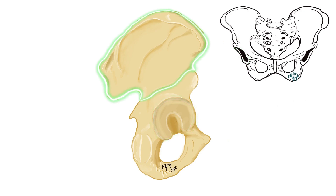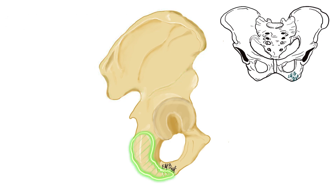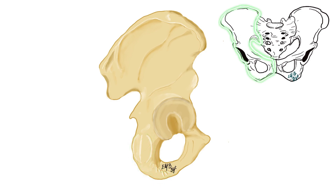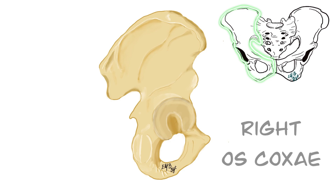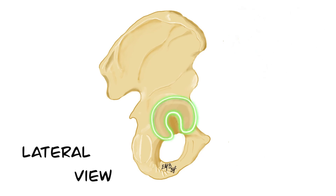The wing-shaped part of os coxa, which is ala osis ilii in Latin, faces superiorly. The protruding rough thick part, which is the ischial tuberosity, faces posteriorly. When we place all these aspects together, we can clearly see this os coxa is the right os coxa. We can clearly see the acetabulum, and since it faces laterally, we are looking from the lateral view in this diagram.